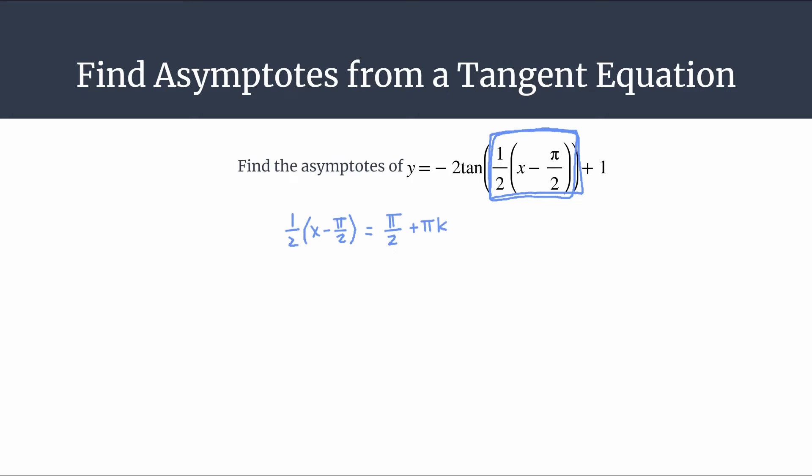And remember k is an integer, so that term pi k kind of stands alone. It's going to be unlike any other term that we have. Alright, so if we're looking at this equation and we want to isolate x, we first should start by multiplying both sides of this equation by 2, or if you want to think about it as dividing by 1 half, you can do that as well.